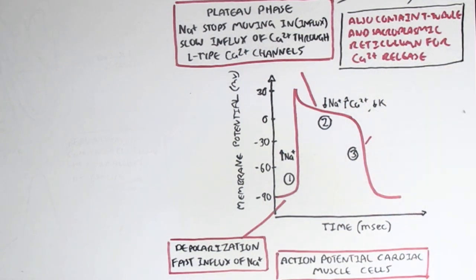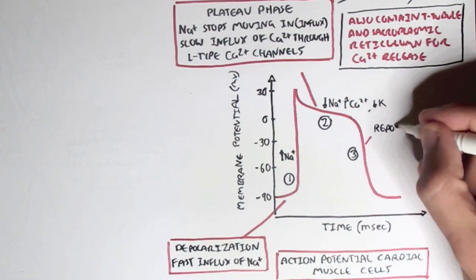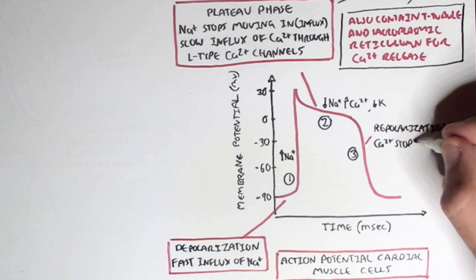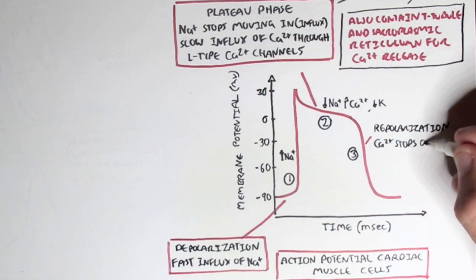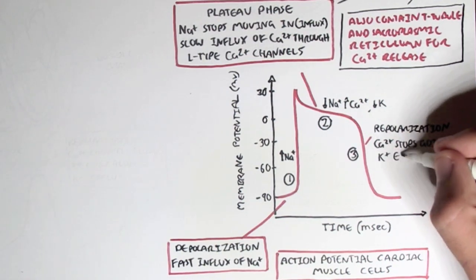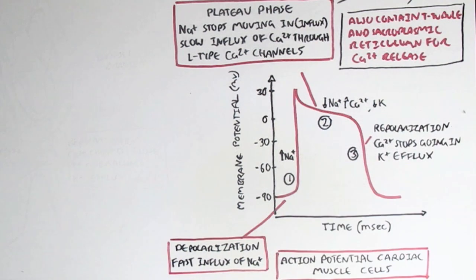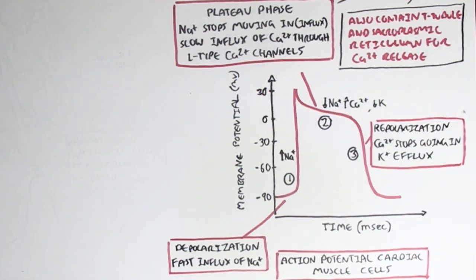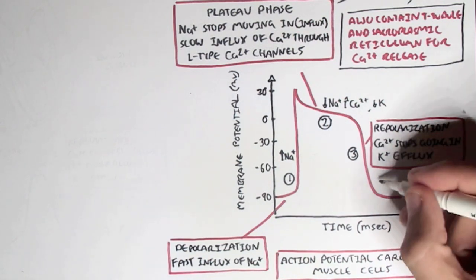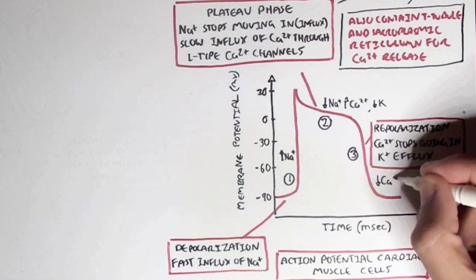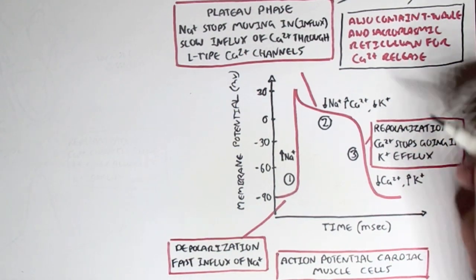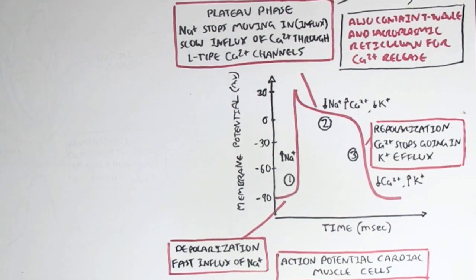After the plateau phase, we have the repolarization phase, where the calcium ions stop going in and potassium ions move out, which causes the membrane potential to become more negative, going back to negative 90 millivolts.